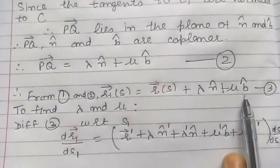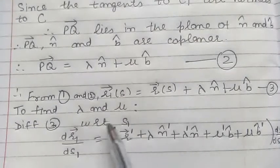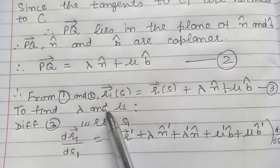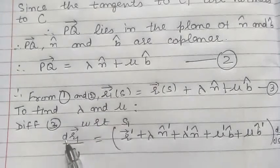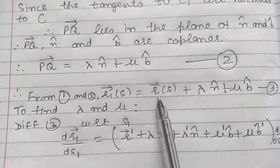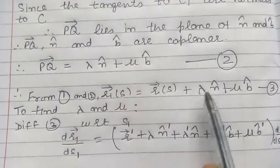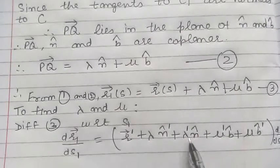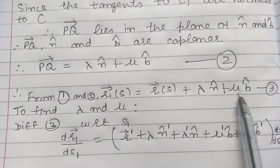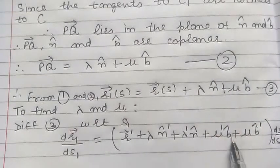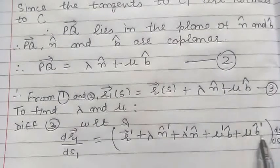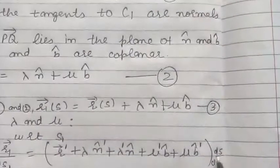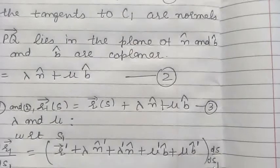Now it remains to find the values of λ and μ. To find these values, let us differentiate this equation with respect to the parameter S1. So the derivative of R1 with respect to S1 is dR1/dS1. The derivative of vector R is R dash. By using the product rule: λ as it is times the derivative of N cap, plus N cap times the derivative of λ; and again by the product rule: μ dash times B cap plus μ times the derivative of B cap. This is the derivative with respect to S, into the derivative of S with respect to S1, which is dS/dS1.